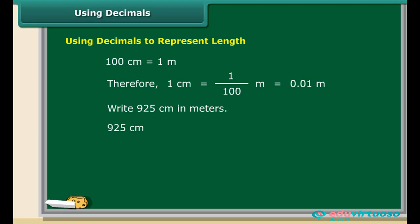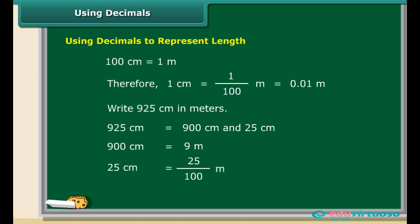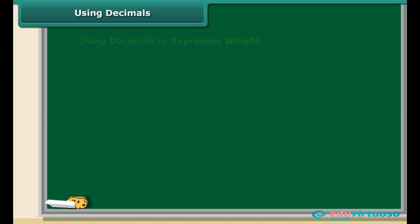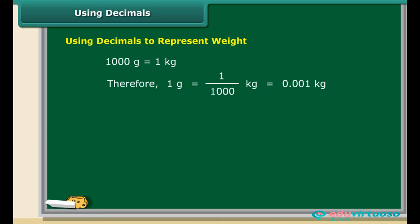925 centimetres may be split as 900 centimetres and 25 centimetres. 900 centimetres are equal to 9 metres, and 25 centimetres are equal to 25 upon 100 metres, that is 0.25. So, 925 centimetres are equal to 9.25 metres.